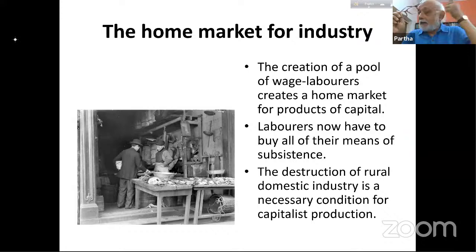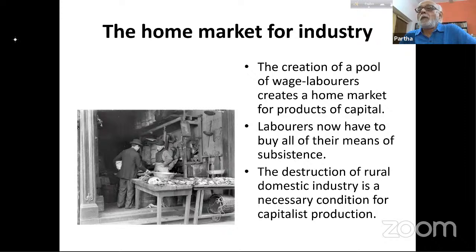The new capitalist farmer was prepared to pay more rent to landlords, who became interested in clearing out commons and throwing out earlier tenants to hand over land to sheep farmers paying higher rents. When you no longer have the same number of direct producers producing their own subsistence, that creates a pool of wage laborers constituting a home market for products of capital.